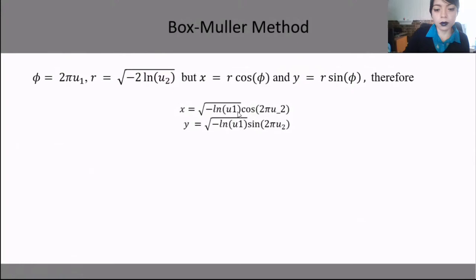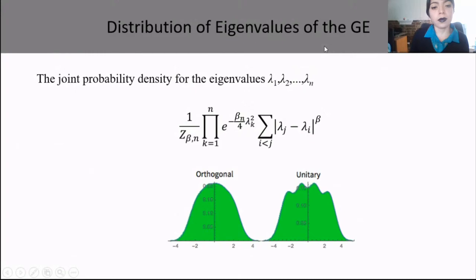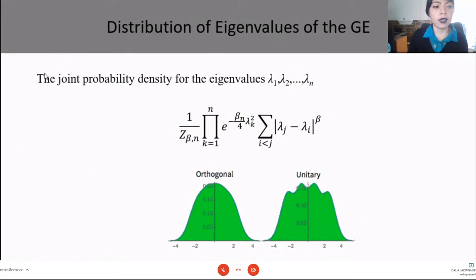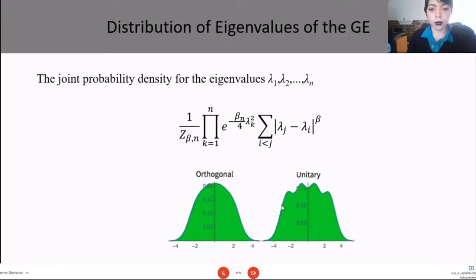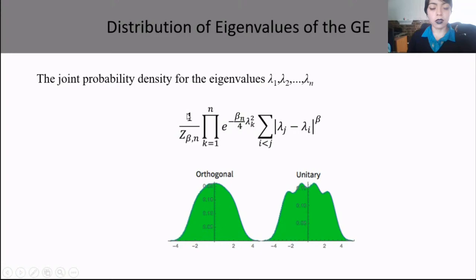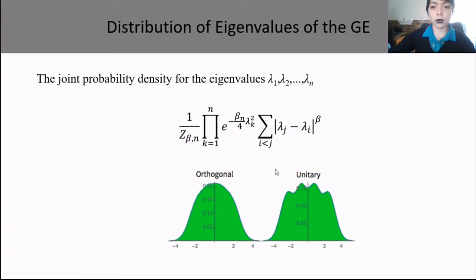Of the random matrices, we study the eigenvalues because we can observe certain properties in them. The Gaussian probability density for eigenvalues of the Gaussian ensembles is given by a function containing a normalization constant, the parameter beta — equal to 1 for orthogonal and 2 for unitary — and the lambda eigenvalues.